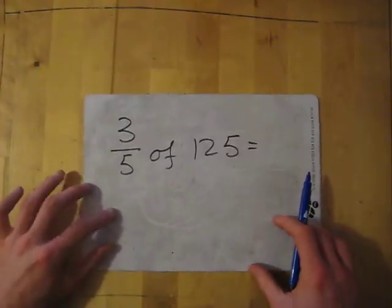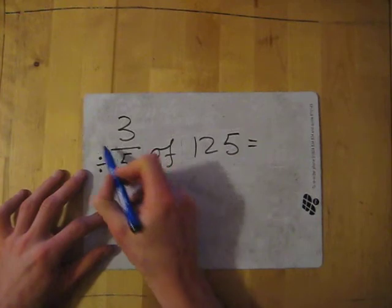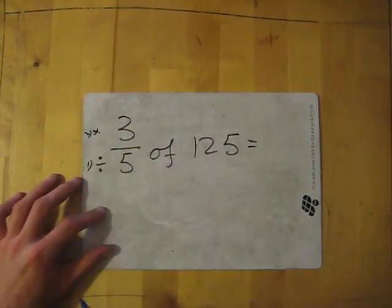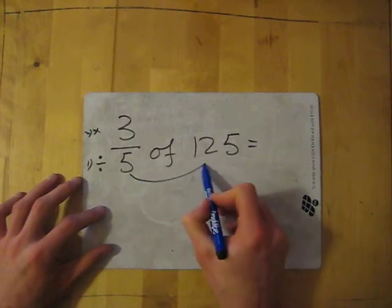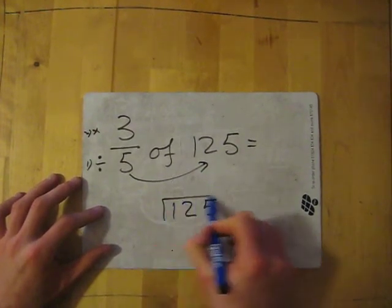So 3 fifths of 125 first. So we divide by the bottom and then we times by the top, and that's the first thing. That's the second thing we do. So we divide by the bottom, so we do 125 divided by 5.